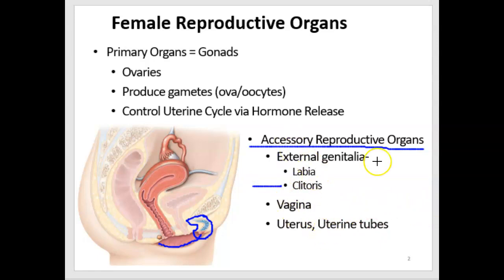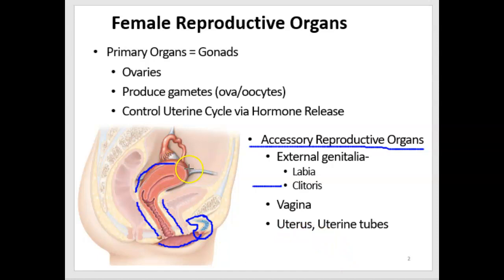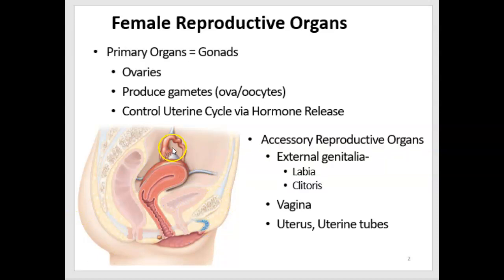The other accessory reproductive organs are actually internal, not external. They include the vagina and the uterus. The uterus has horns, or tubes, which can be called fallopian tubes. They look like they're attached to the ovary, but they're really not — they're just close in proximity.